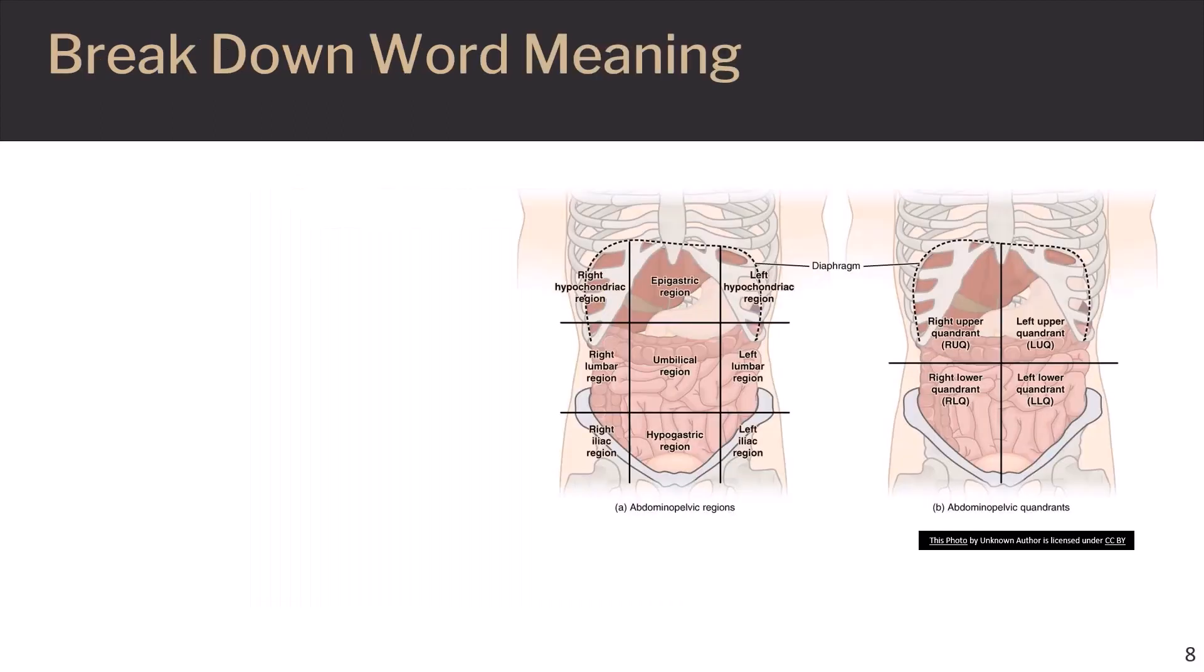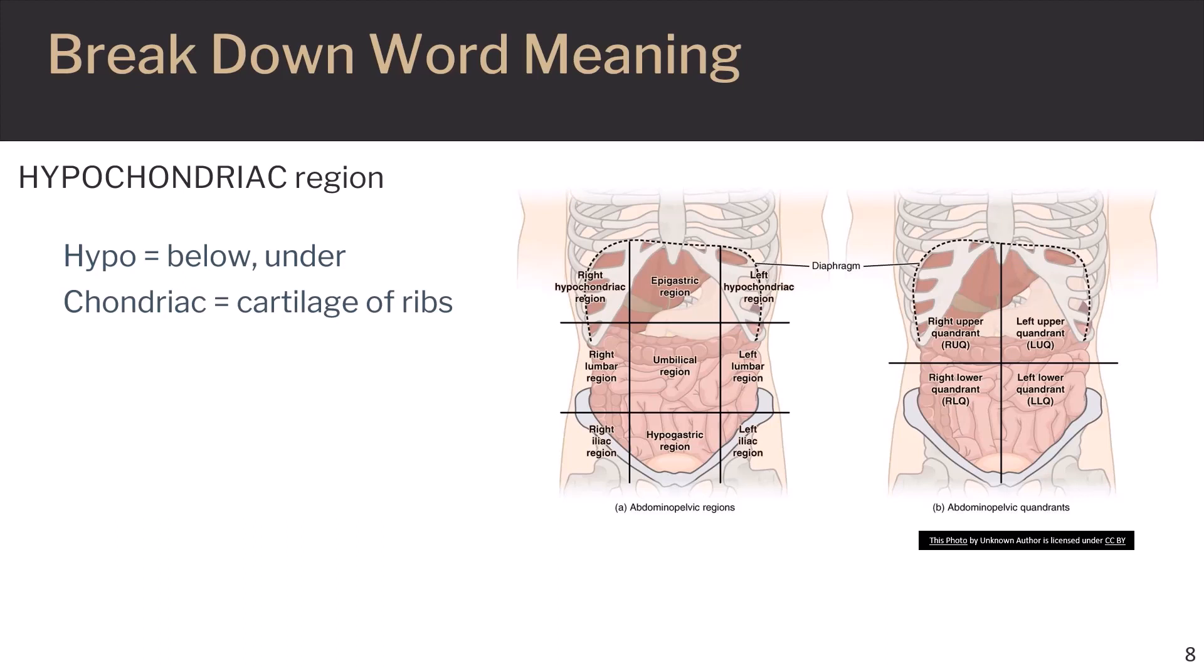Another way to remember a definition or where a region is, break the word down into individual meanings. For example, for the hypochondriac region, the word can be broken down to hypo, which means below or under, and chondriac, which means cartilage of the ribs. So the hypochondriac region is the abdominal region below the rib cartilage.